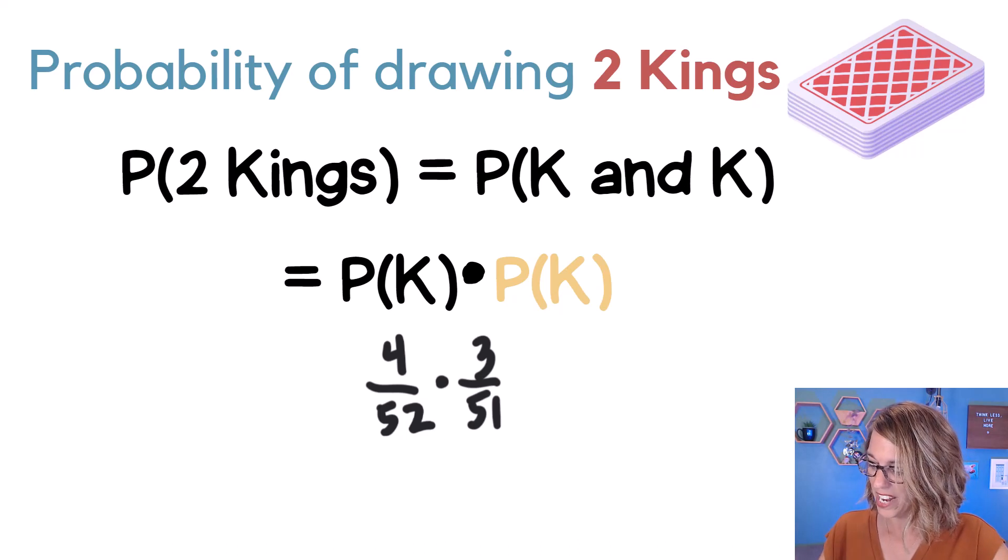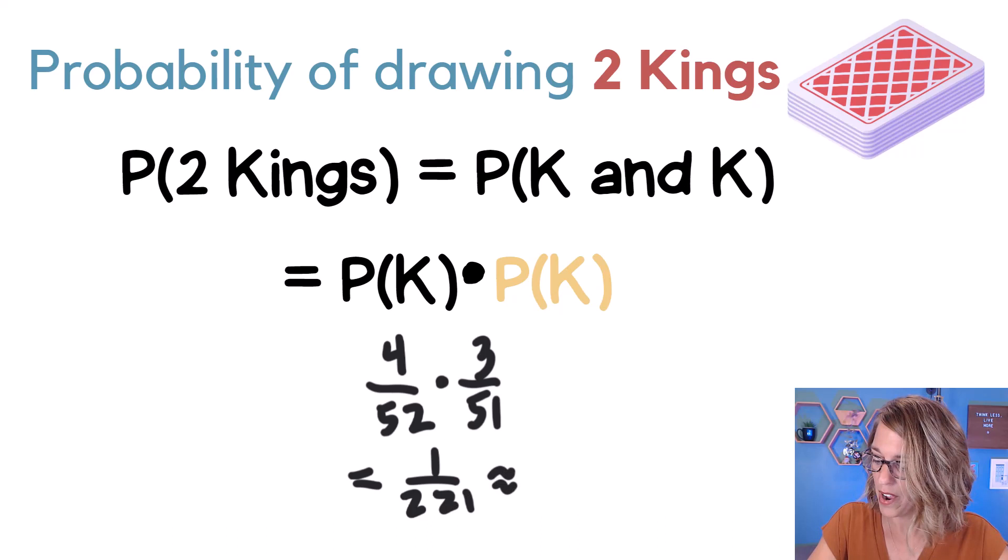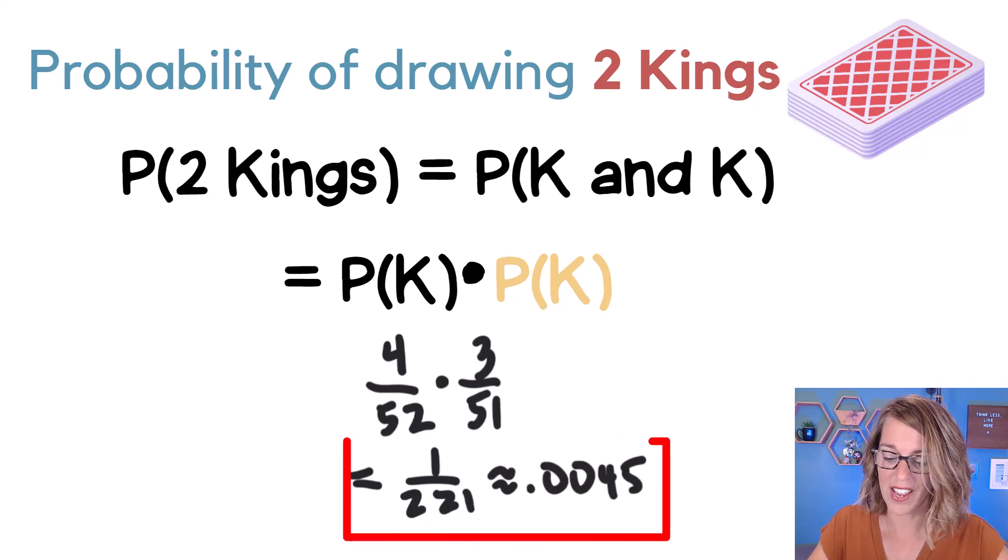Let me go ahead and do that multiplication in my calculator. As a reduced fraction, I get a probability of 1 over 221, which is approximately 0.0045, a really small probability.